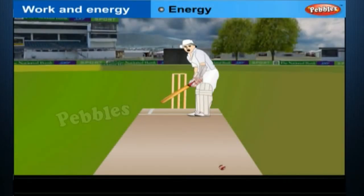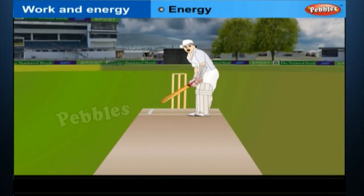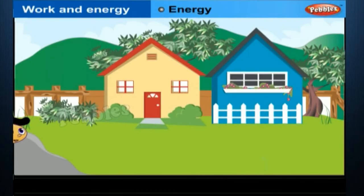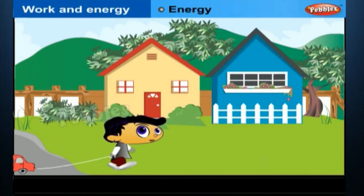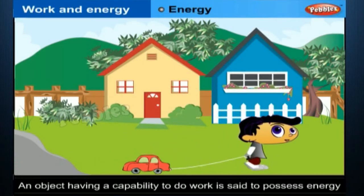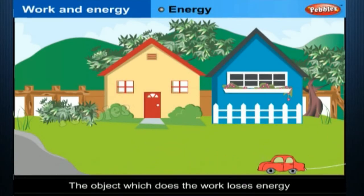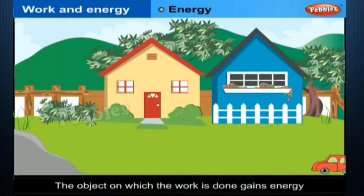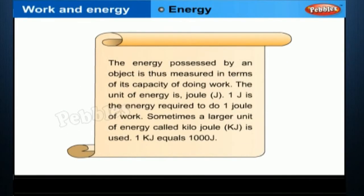Energy. When a fast-moving cricket ball hits a stationary wicket, the wicket is thrown away. We have also observed children winding a toy car, and when the toy is placed on the floor, it starts moving. An object having a capability to do work is said to possess energy. The object which does the work loses energy, and the object on which the work is done gains energy.